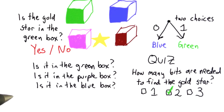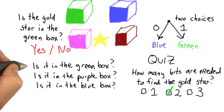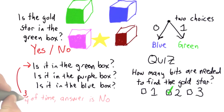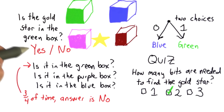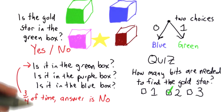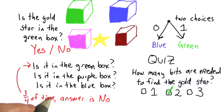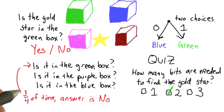The way to do it in two questions is to ask a question that gives us more information. The problem with asking 'is it in the green box?' first is that three quarters of the time the answer is no. If we're trying to use yes/no questions to get as much information as possible, we want to ask questions where the answer is equally likely to be yes as it is to be no — half the time yes and half the time no.